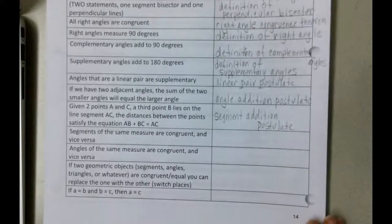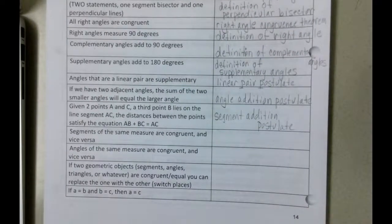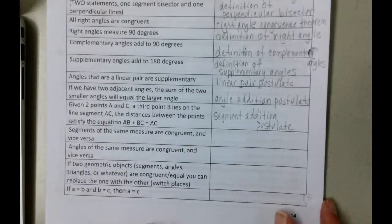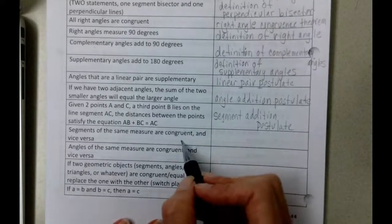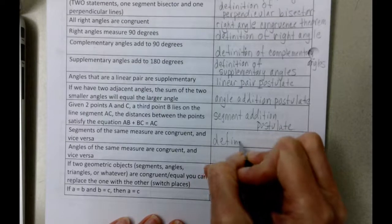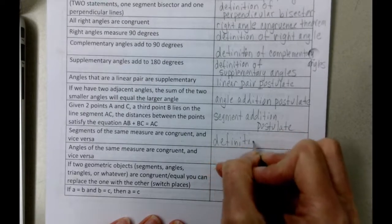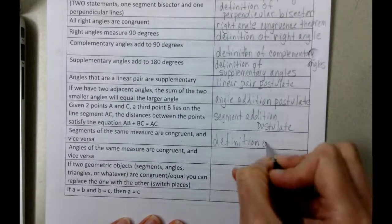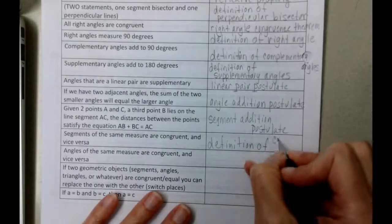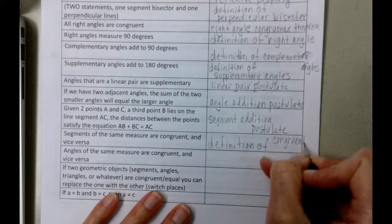Close to being done here. Segments of the same measure are congruent and vice versa. This is the one that we use a lot and it sometimes seems very redundant. So we're going to practice this one a lot, but this is the definition of congruent segments.